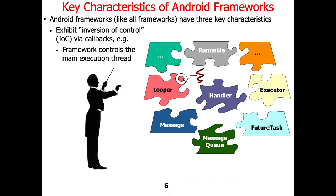Inversion of control is a very fundamental concept in modern software development. Pretty much everything works that way these days. The alternative to inversion of control would be self-directed code, where you write the entire code yourself and you, the application developer, decide how the control flows to the system. It's very rare to do that for anything other than simple, trivial programs.